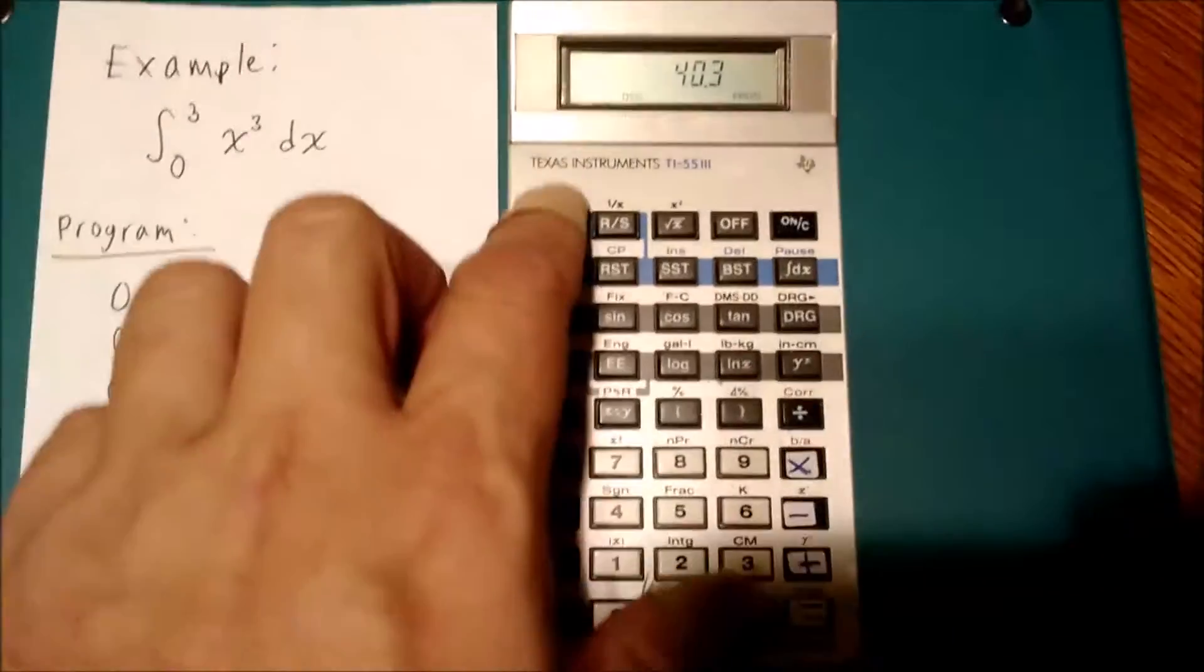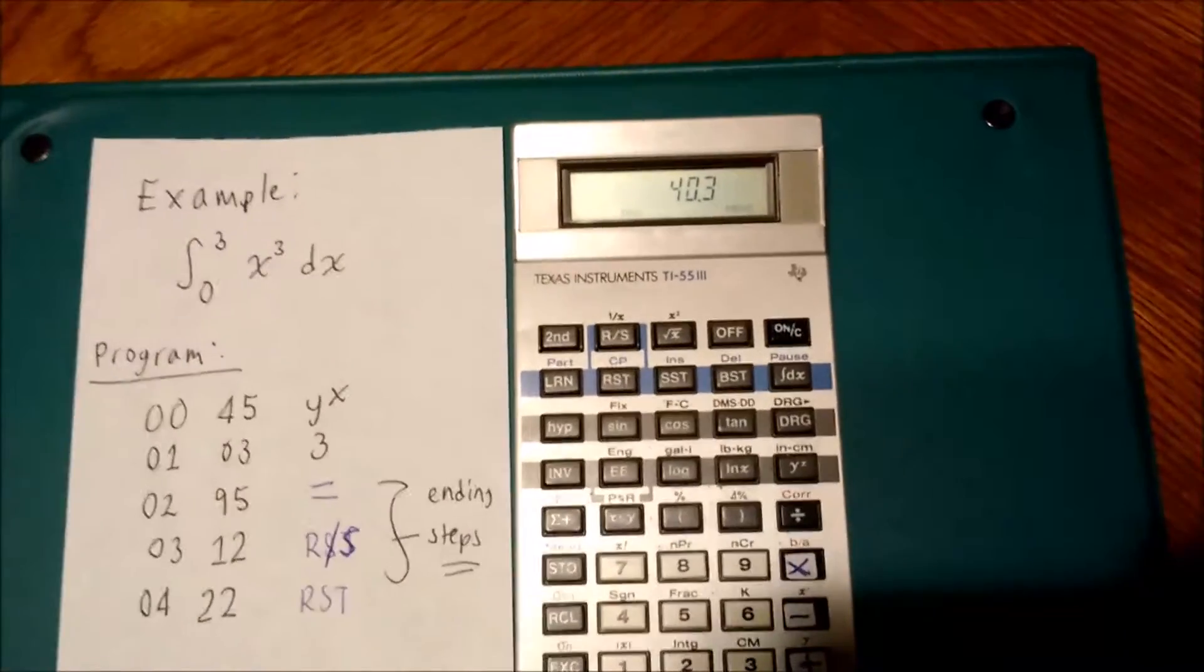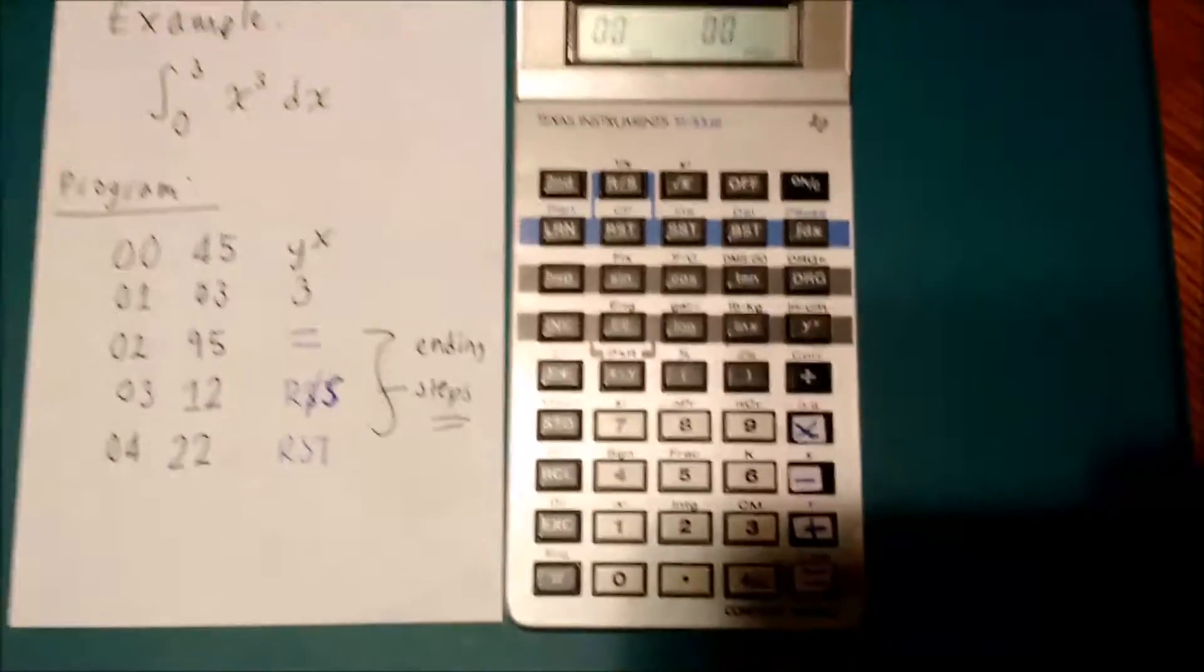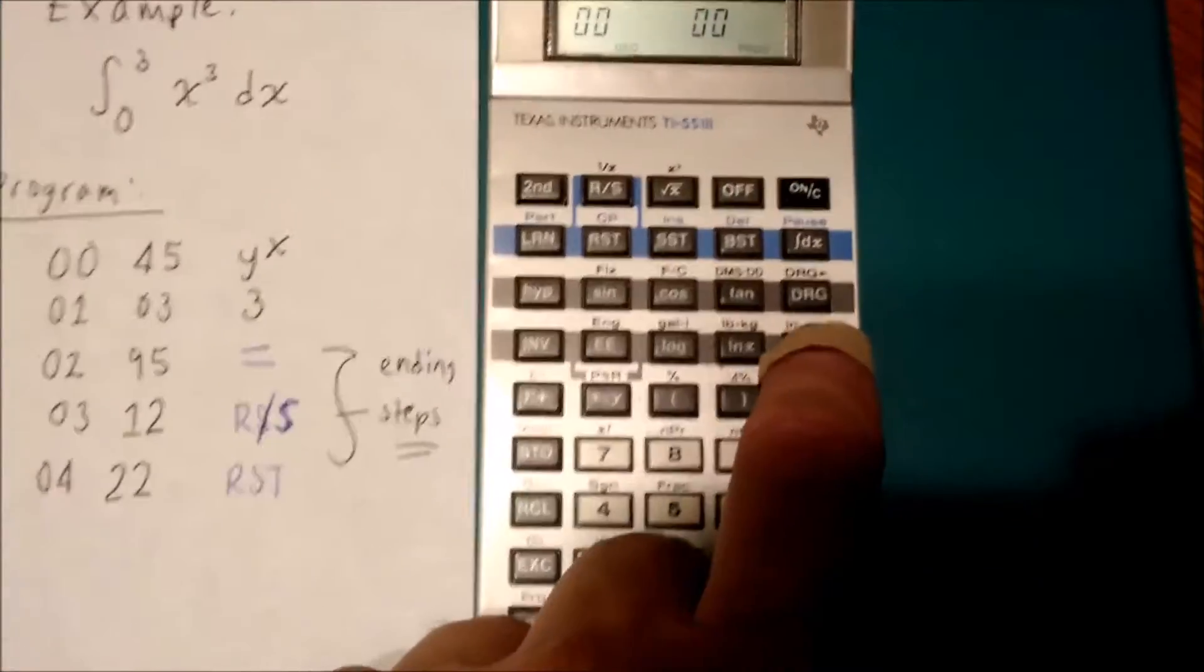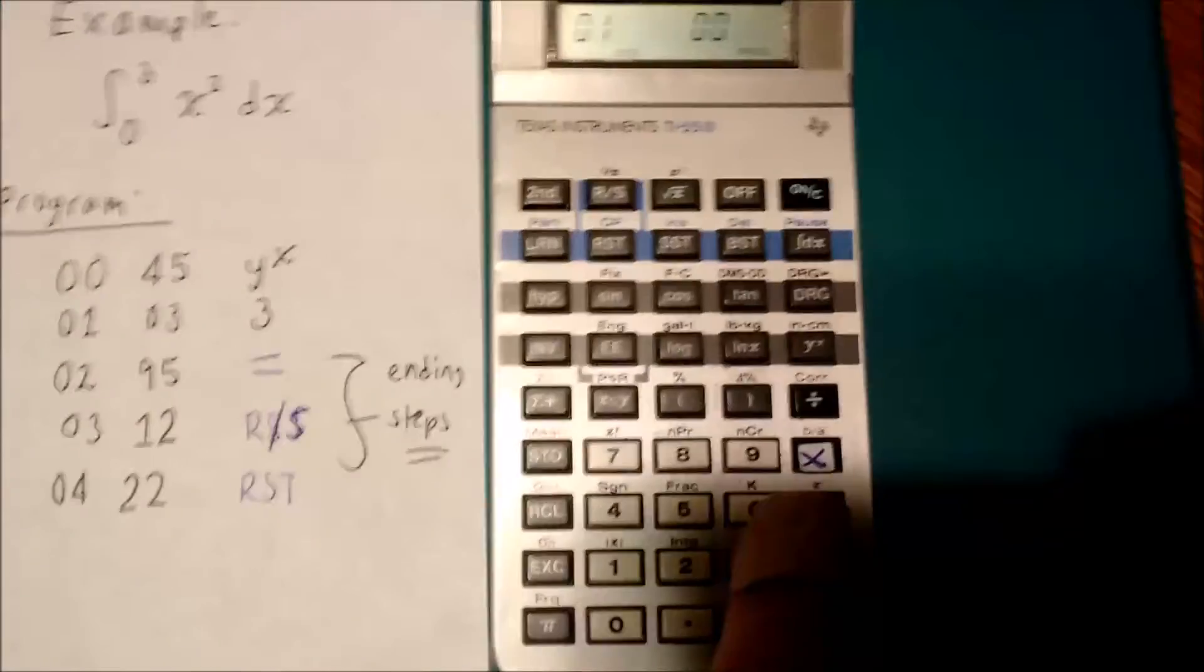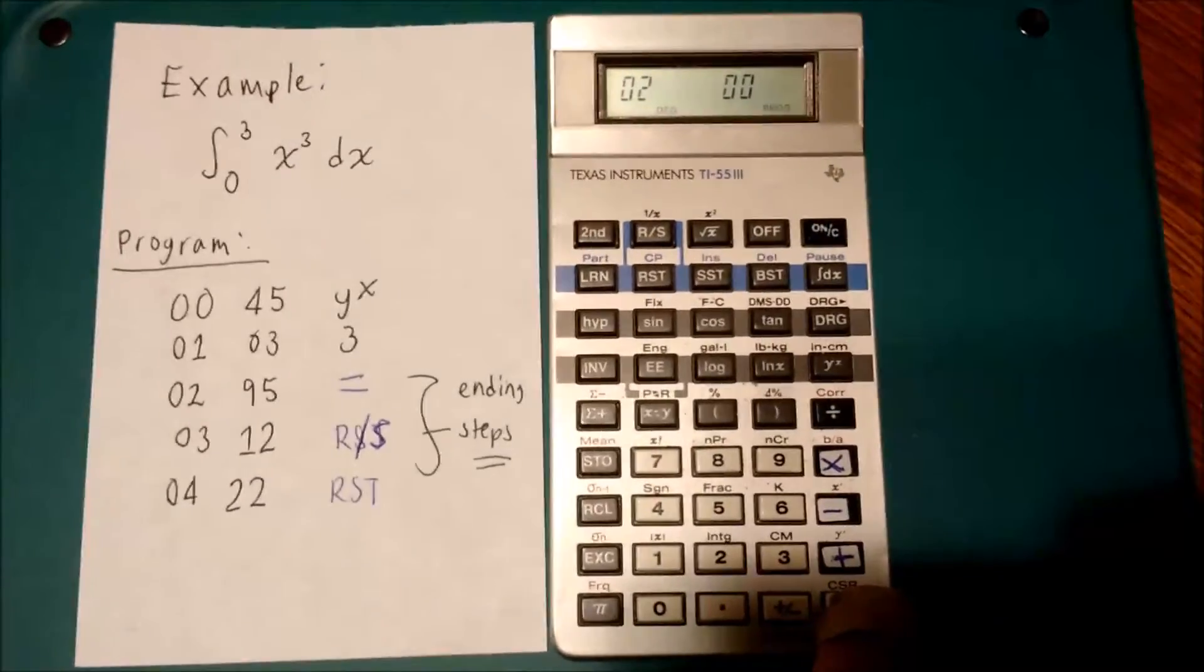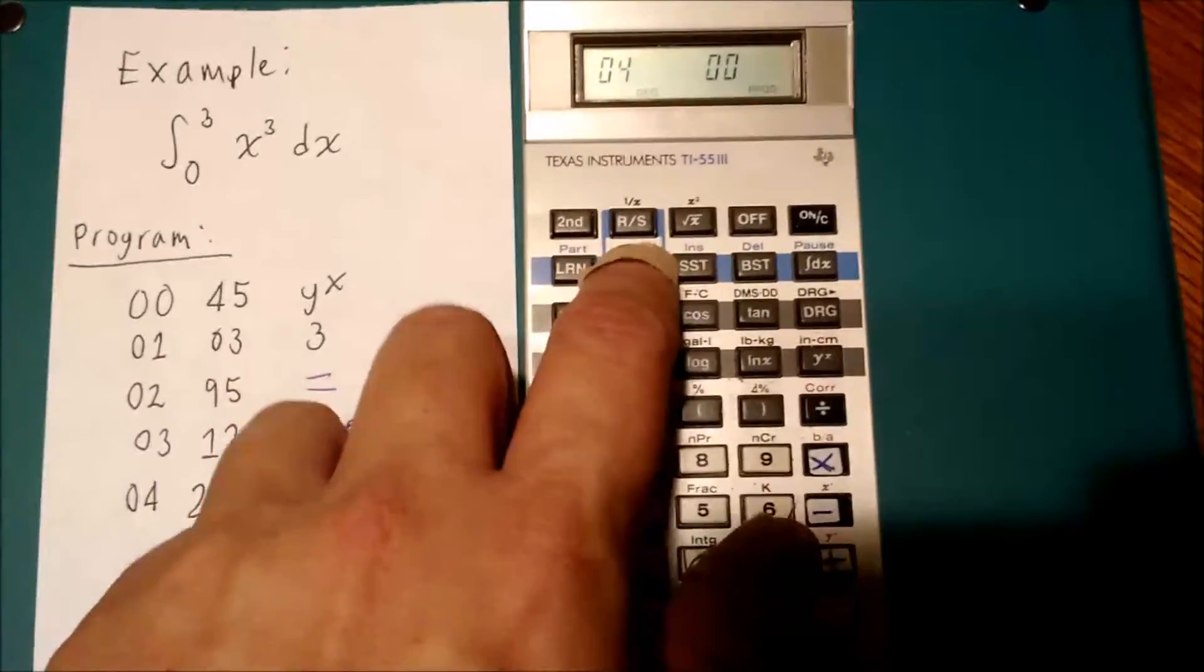So we're going to go into learn mode. I'm going to reset to put the pointer at step 0, and I'm going to hit learn, and I'm going to enter my integrand. So here's my power key, and then 3, and then the 3 required ending steps: equals, run-stop, reset.